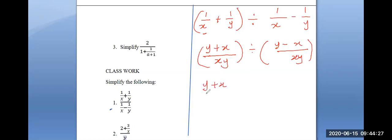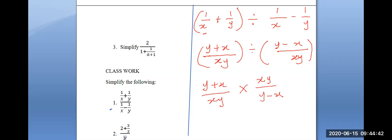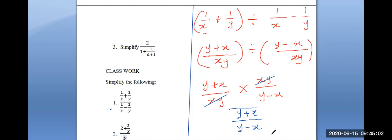So we have (y plus x over xy) divided by (y minus x over xy). Division changes to multiplication — invert the right-hand fraction: (y plus x over xy) times (xy over y minus x). The single term xy in the numerator cancels with the single term xy in the denominator, leaving the final answer: (y plus x) over (y minus x).